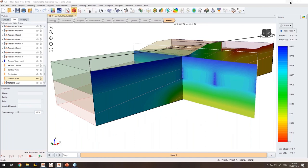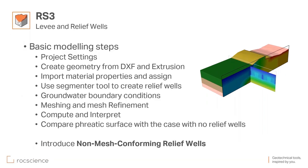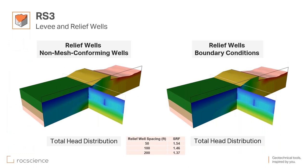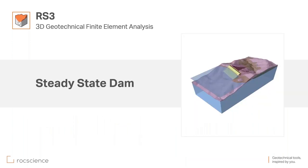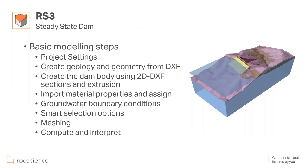Looking at the results summary: based on the distance between relief wells, you get different factors of safety, which we will address in the next presentation. The second example is a steady state seepage analysis of a dam. Starting from a fresh file with project settings and material properties, the workflow is: generate geology and geometry using 3D surfaces, import dam sections, assign properties, define groundwater boundary conditions, use smart selection, mesh, compute, and view results.